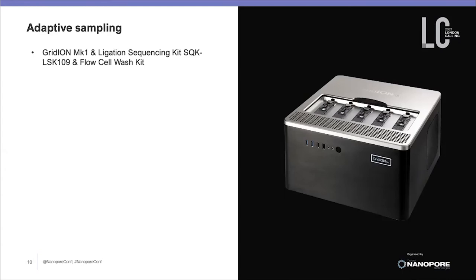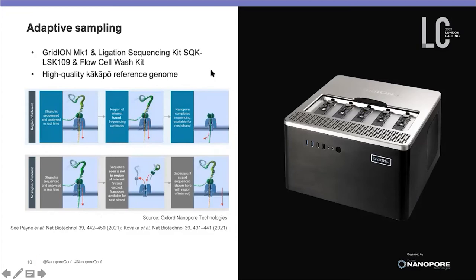This is when I started using Oxford Nanopore Technologies' Adaptive Sampling together with the GridION, which has a very powerful GPU. For this approach you need a high-quality reference genome, which is available for the kakapo. There are also many initiatives trying to create more reference genomes globally, including Oxford Nanopore Technologies' initiative org.1. There have been many great publications about adaptive sampling, including the ReadFish and Uncalled approaches.